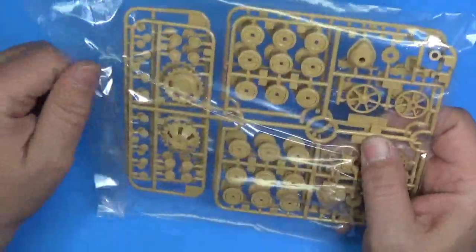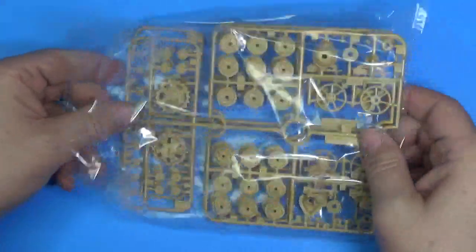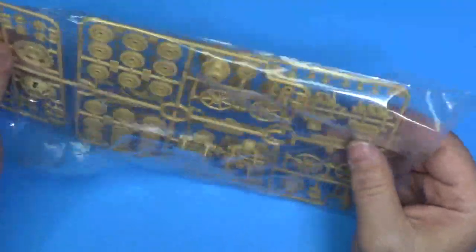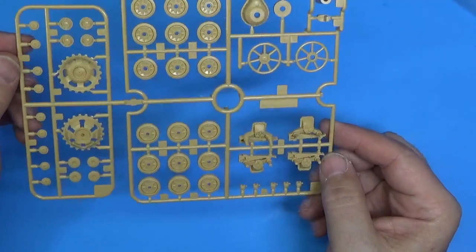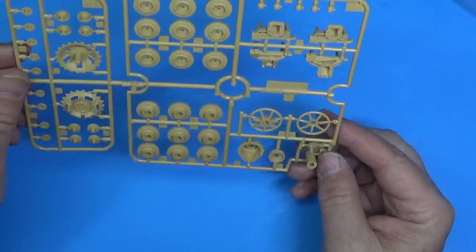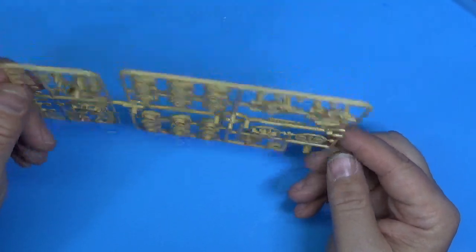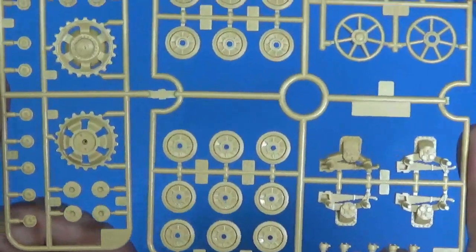Next, in our Tamiya stapled bags, we have matching sets of road wheels, idler arms, sprockets. You ever built a Tamiya armor kit before? They are wonderfully simple and beautifully detailed. And you know, zero flash.